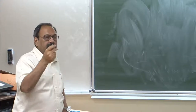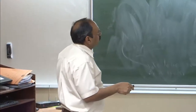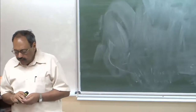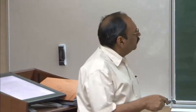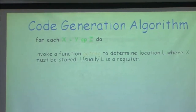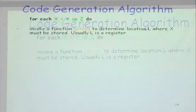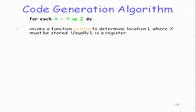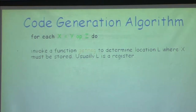If getreg returns a register, we check whether y is already in it. We look at the address descriptor of y to find y', the fastest available location for y — preferably a register. If y is not already in L, we generate a move instruction: move y' to L. Then we generate the operation: L = L op z'.